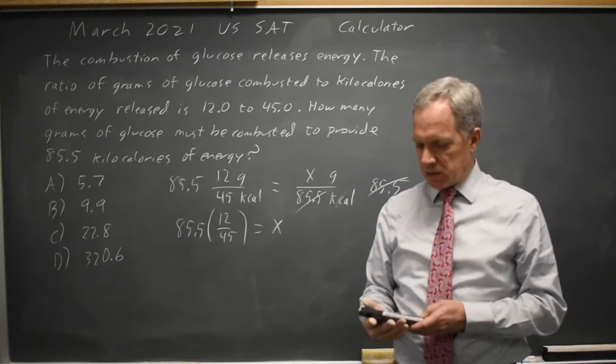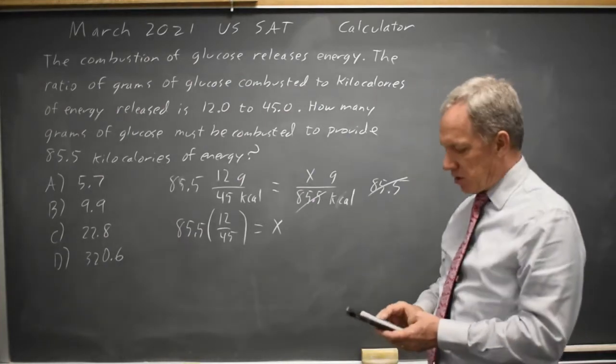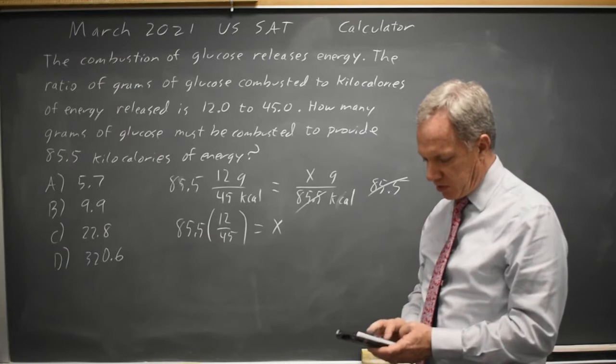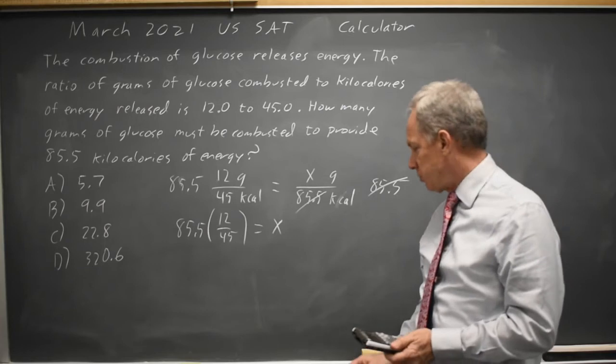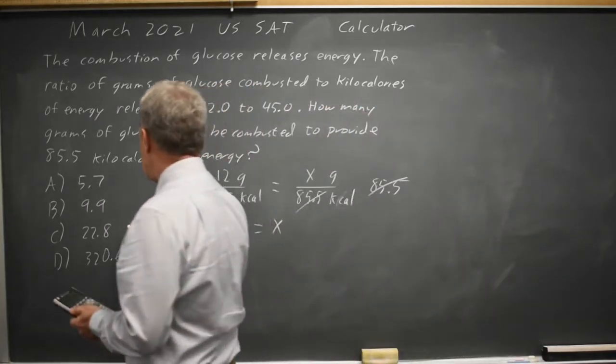After the first setup I don't worry about keeping my units, I know I did them correctly. So 85.5 times 12 over 45 gives me 22.8, that is choice C.